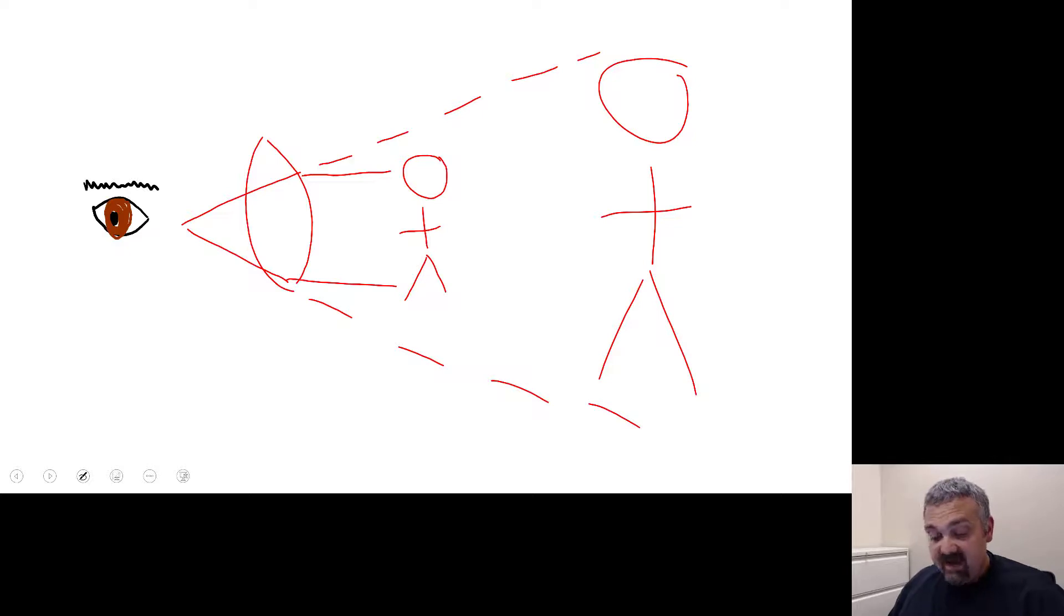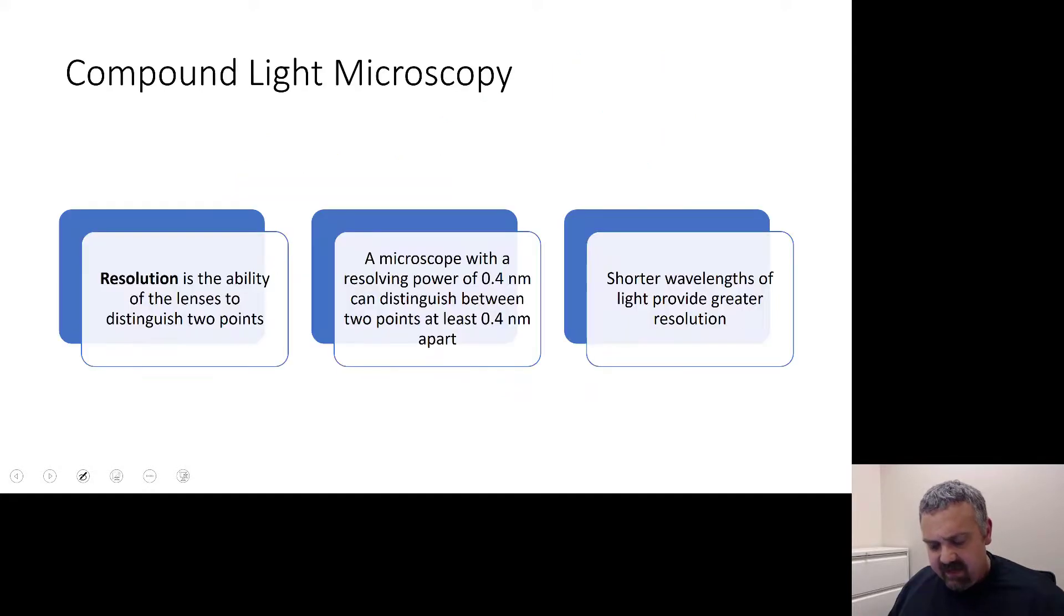So we have compound microscopes that are using multiple lenses, which makes this even more effective. And we can clearly see things at 1000x with a light microscope. Some light microscopes that I've used can get to 2500x. And then of course, we'll talk in a moment about how electron microscopes and other microscopes can get even higher. We won't go into too much detail in this video with that, but I do want to talk about it a bit.